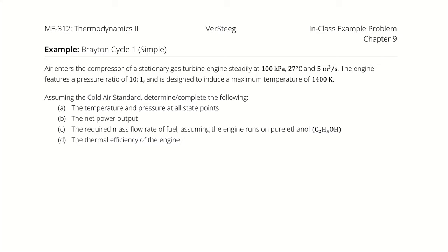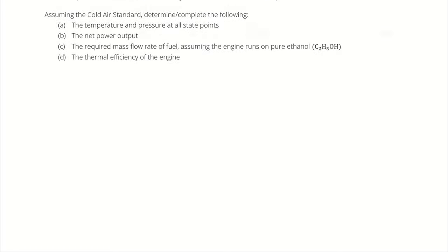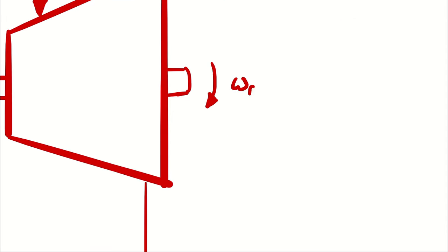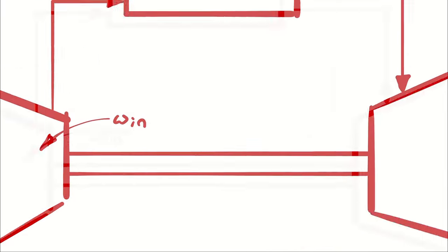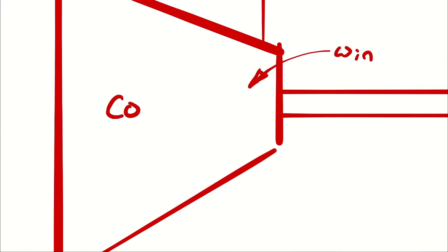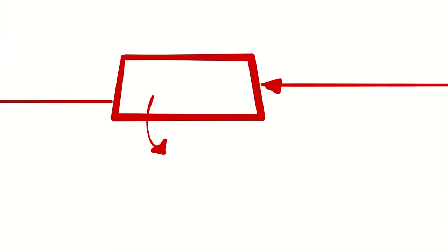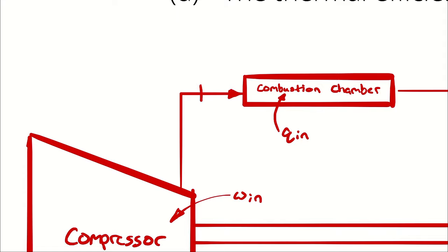First, I will recognize that I'm analyzing a simple Brayton cycle. I know it's simple because it's stated in the problem, and also because there is no indication of any additional devices. General rule of thumb: if you aren't told enough information to deduce otherwise, assume the least complicated setup or the most ideal setup. Then I will draw a system diagram.